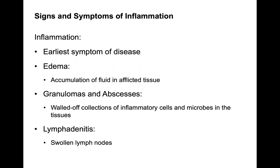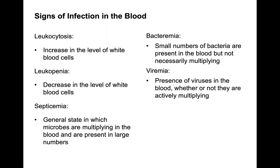Inflammation is usually the earliest symptom of a disease, involving buildup of fluid, developing an abscess, or possibly lymphangitis. Signs of infection in the blood include leukocytosis — an increase in white blood cell counts — and leukopenia, a decreased level of white blood cells. Septicemia is a general state in which microbes are multiplying in the blood in large numbers. Bacteremia means small numbers of bacteria are present in the blood but not necessarily multiplying. Viremia is the presence of viruses in the blood, whether or not they are actively multiplying.